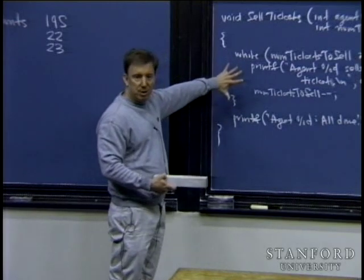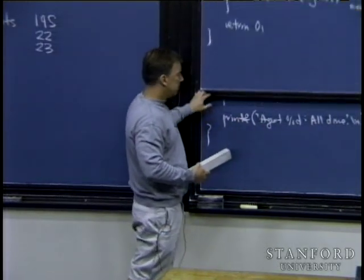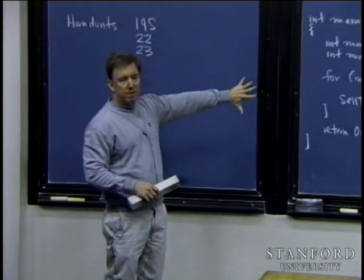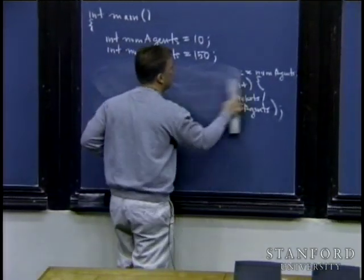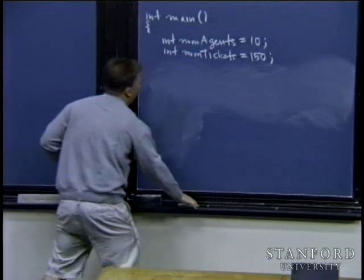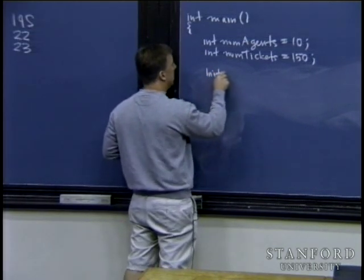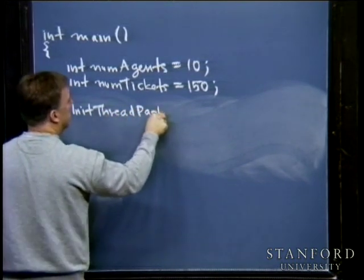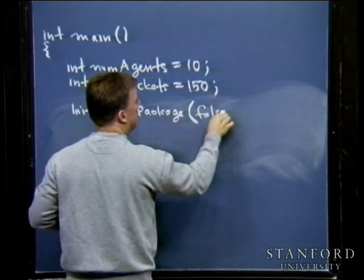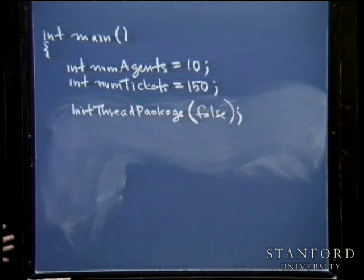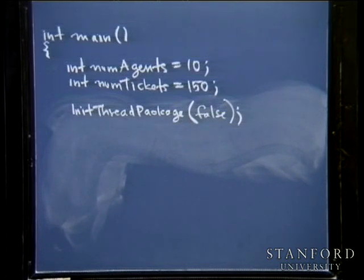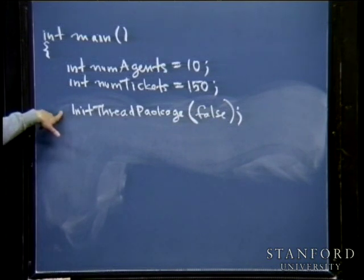I'm going to leave the sell_tickets function as is and write a different for loop. After framing the simulation in terms of num_tickets and num_agents, I call init_thread_package — passing in false. You know how in CS106 you call init_graphics to bring up the graphics window? Similarly, if you want to use the thread library on our system, you have to tell the executable you're going to be doing that. This initialization routine must always be called before any other function in this library.